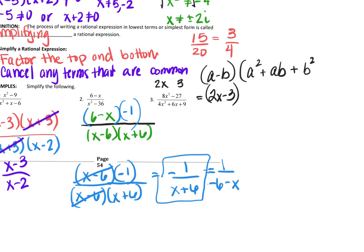A squared will be 2x squared. So that'll just be 4x squared plus ab is 2x times 3. So that'll be 6x. And then b squared is 3 squared, which is 9.